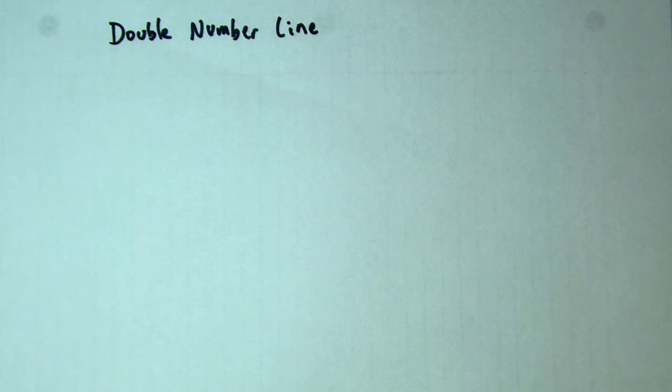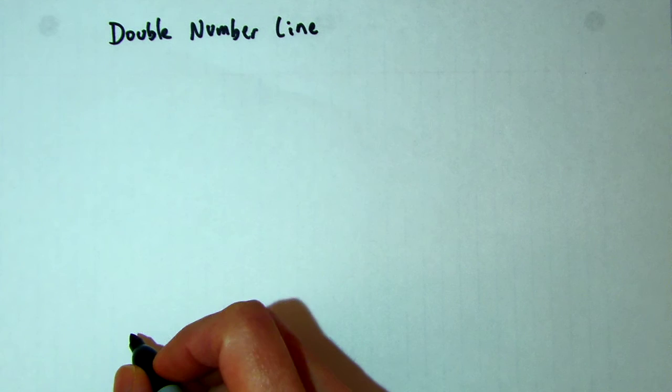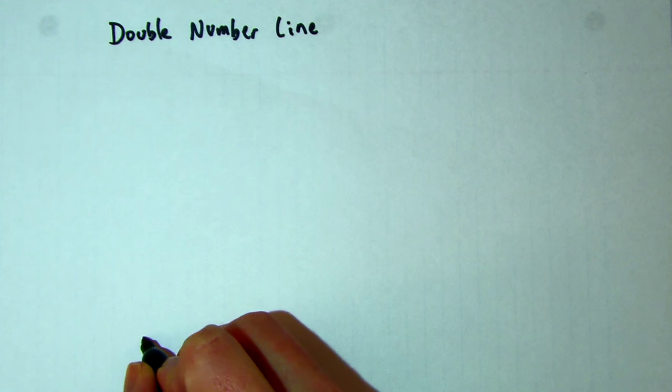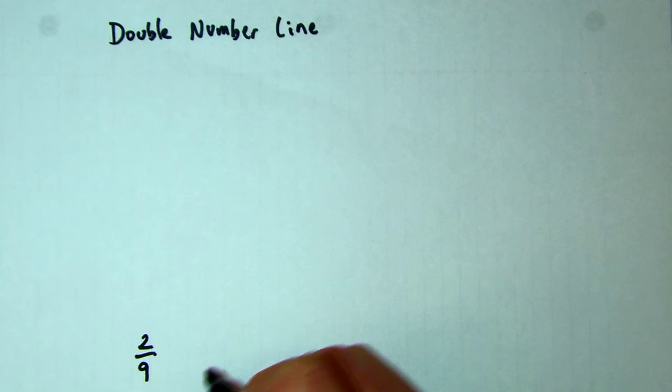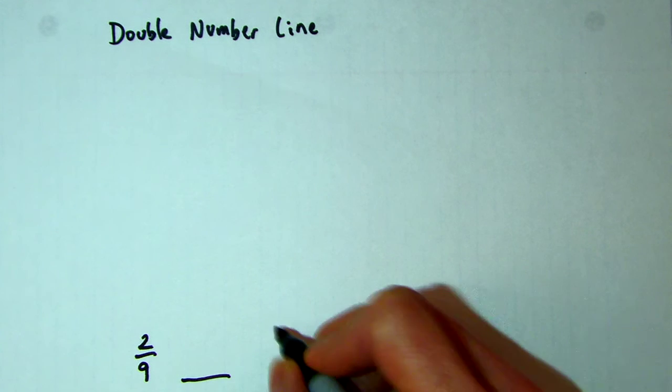Okay, this is a double number line video. I'm going to do an interesting problem. I'm going to look for a fraction that is directly in between 2/9 and 4/5.